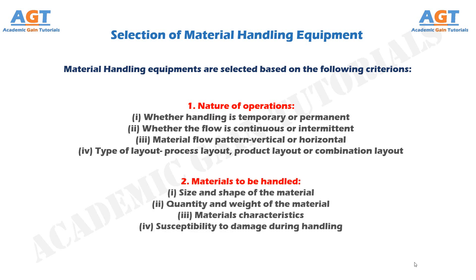Number 2: Materials to be handled. This includes size and shape of the material, quantity and weight of the material, materials characteristics, and susceptibility to damage during handling.